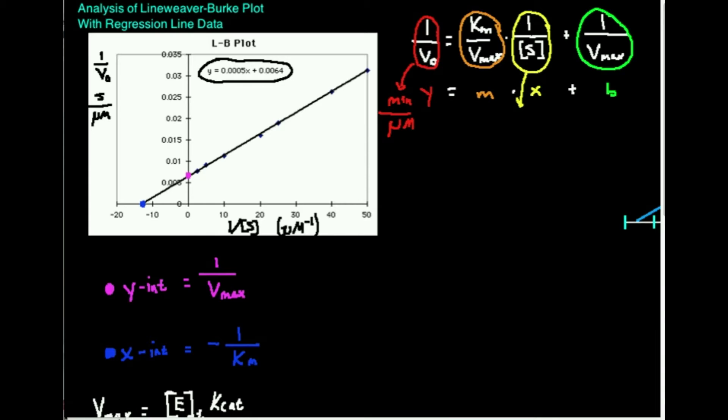Lineweaver-Burk plots are number one more accurate than Michaelis-Menten to begin with, but out of the two ways you can do Lineweaver-Burk plots, generating an equation is the most accurate way to do this. And if you're doing this in the lab or research setting, you would always do that.